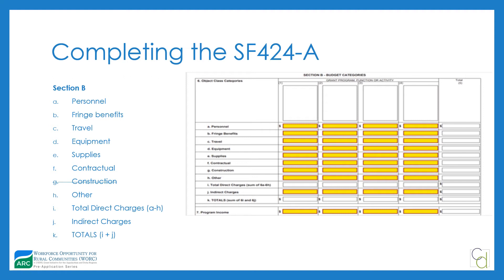Construction and property acquisition are not allowable, so that line should be zero. Capital expenditures go in equipment. Because the SF-424A and the budget narrative go hand in hand, I'm going to jump over to an overview of the budget narrative and then walk through each object cost category since they mirror each other.